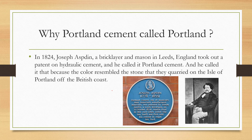Why is Portland cement called Portland? In 1924, Joseph Asdin, a bricklayer mason in England, took out a patent on hydraulic cement. He called it Portland cement because the color resembles the stone they quarried on the island of Portland off the British coast.